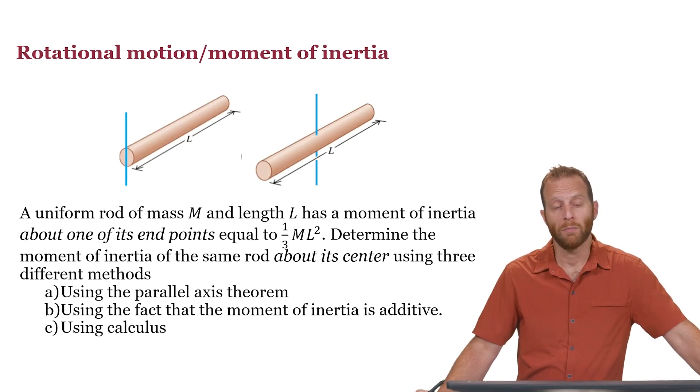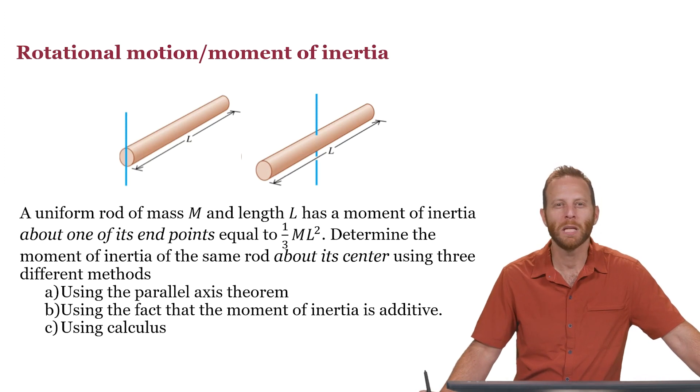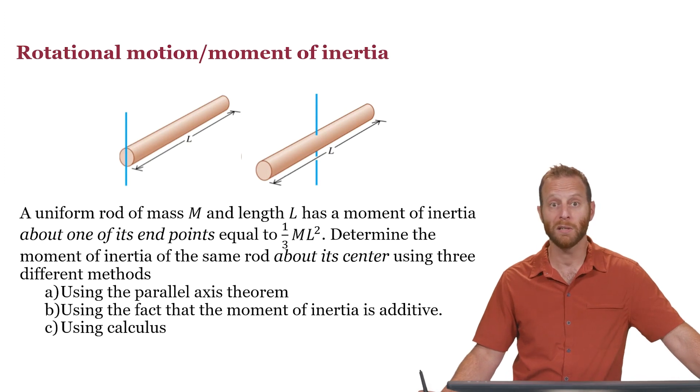In this problem we have a uniform rod of mass m and length l, and we know that it has a moment of inertia about one of its endpoints equal to one-third ml squared. At least that's what we're told in the textbooks. So we'd like to determine what is the moment of inertia of that same rod about its center, and we're going to do that using three different methods.